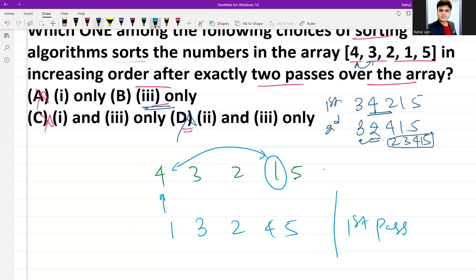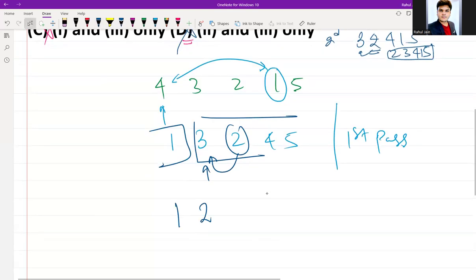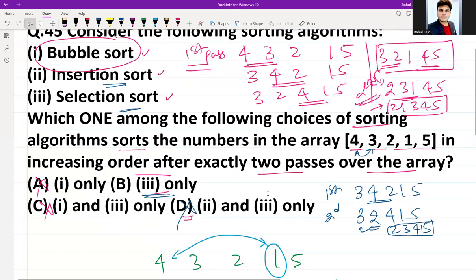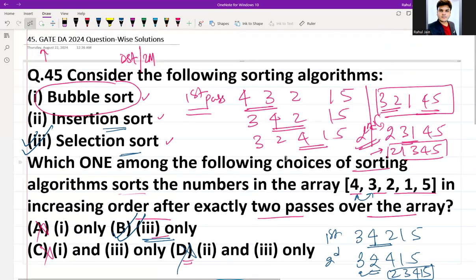Now after second pass, again the next minimum - so the next minimum in the remaining array is 2. It will be swapped from the second position because it is already sorted now. So the index is here. So if I am going to swap it, it would be 1, 2, 3, 4, 5. So after second pass, my array is sorted using selection sort only. Thus only option 3 is the correct one. Thus option B is the correct answer for this GATE question which was asked for 2 marks.